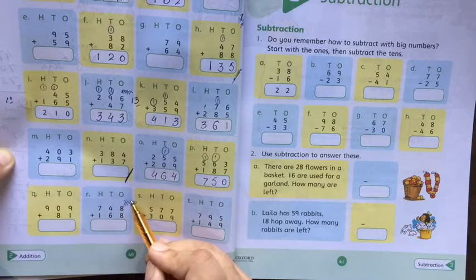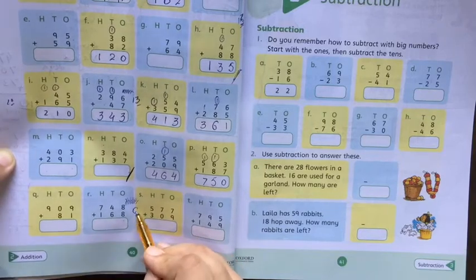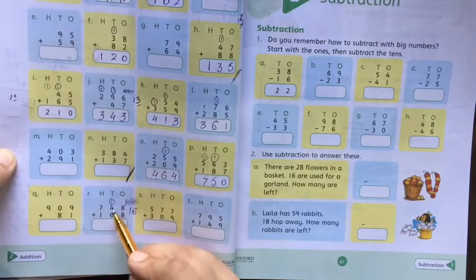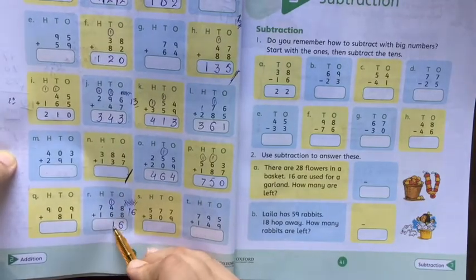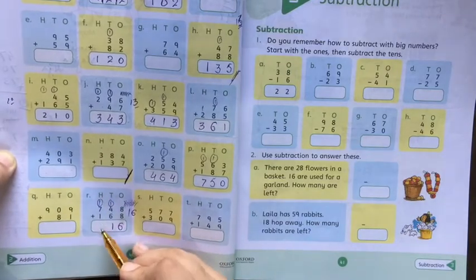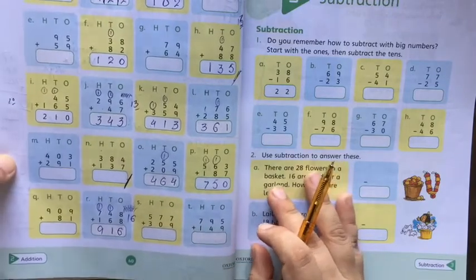10, 11, 12, 13, 14, 15, 16. 6 plus 4 equals 10, 11. 7 plus 1 equals 8, 9, 16. These are very easy questions, you can do them yourself.